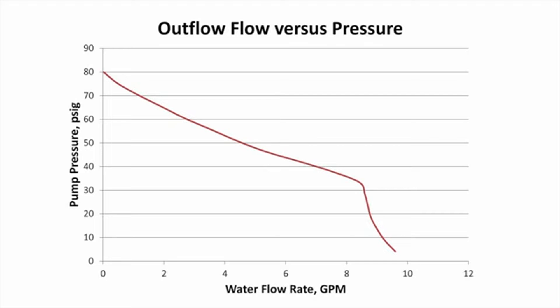All non-positive displacement pumps have a pressure versus flow curve that is very similar to this one. As the pressure decreases on the output of the pump, the flow rate coming out of the pump increases.